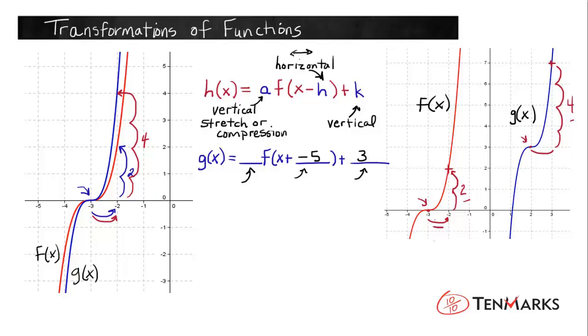To finish up our equation over here, we need to put a 2 where the a would go. So our equation for g of x in terms of f of x would be g of x equals 2 times f of x minus 5 plus 3, and that would be our answer.